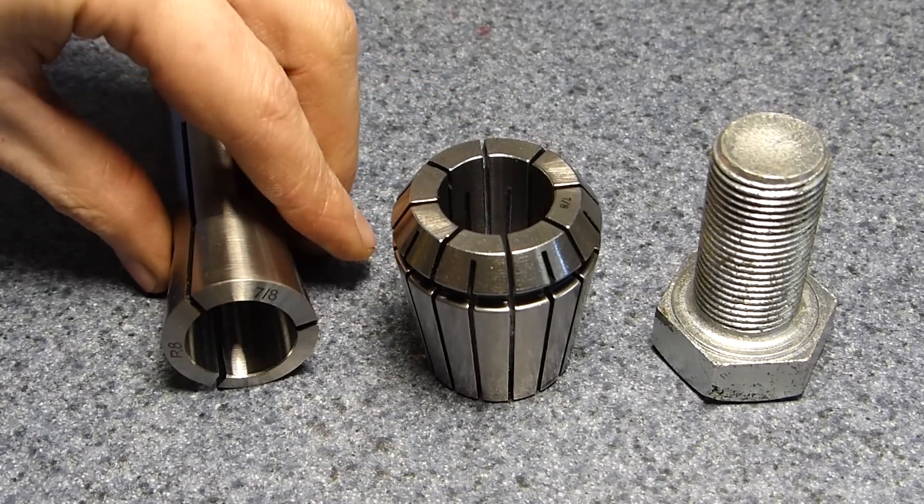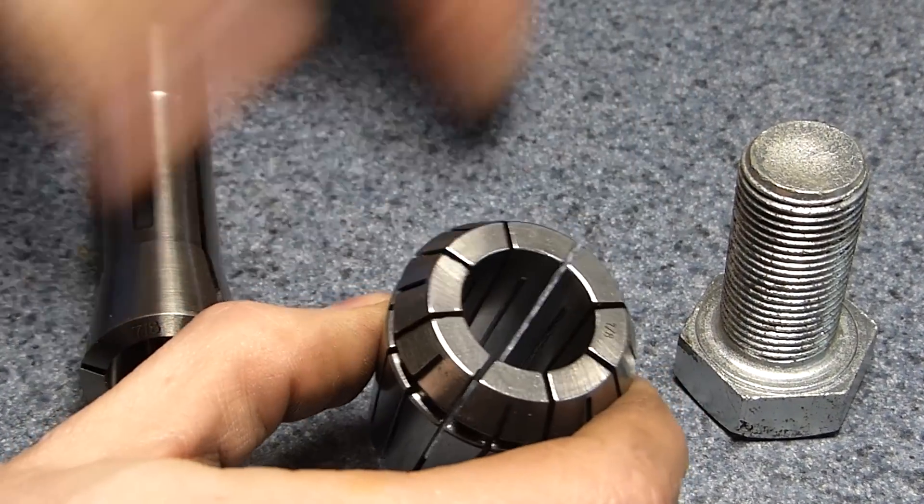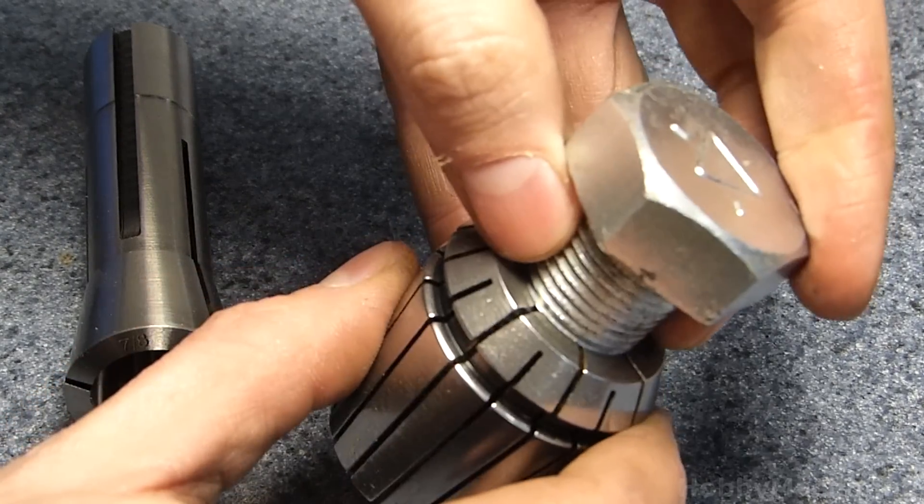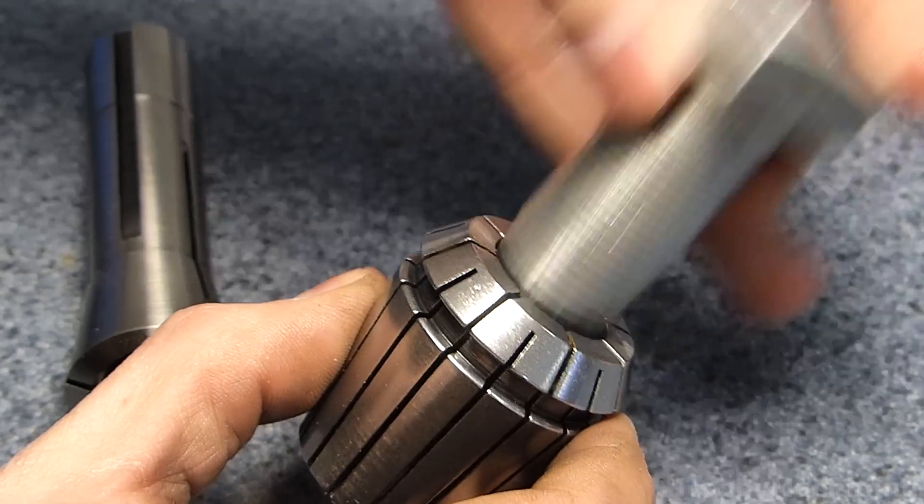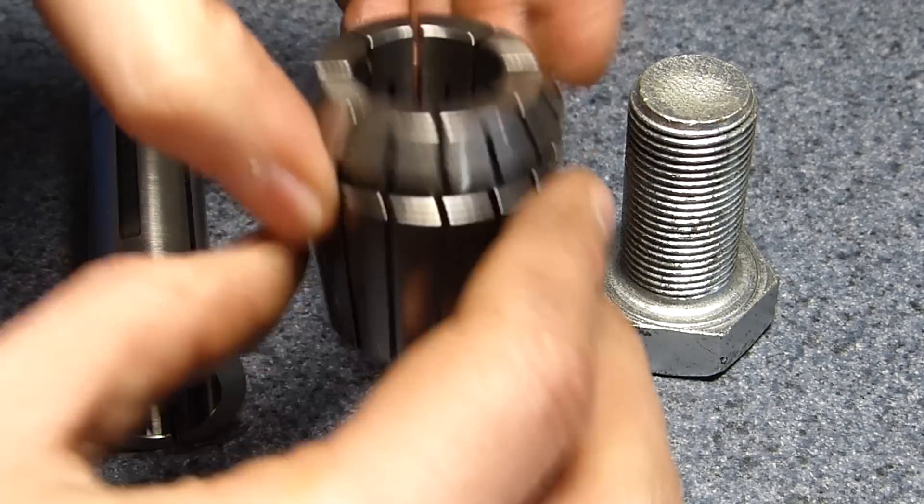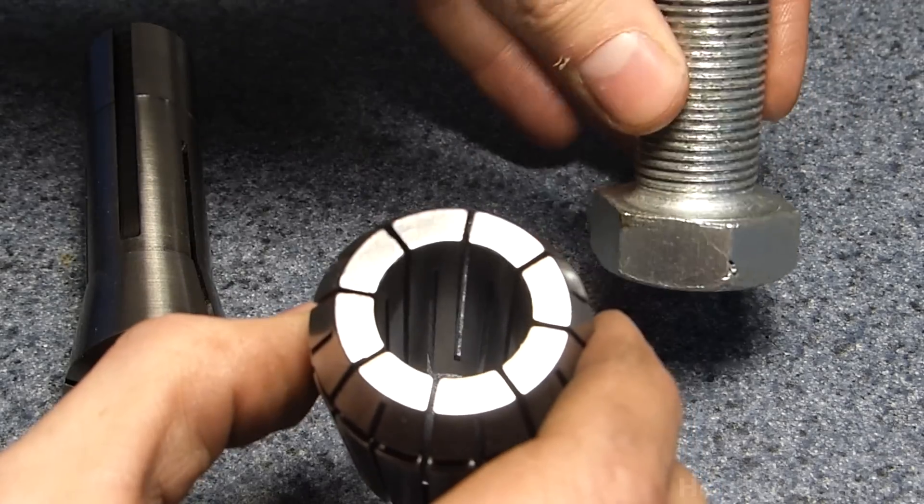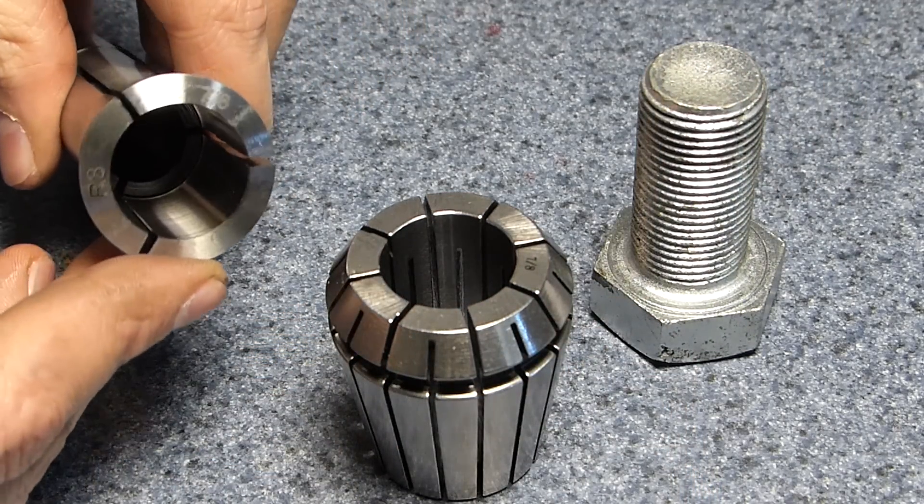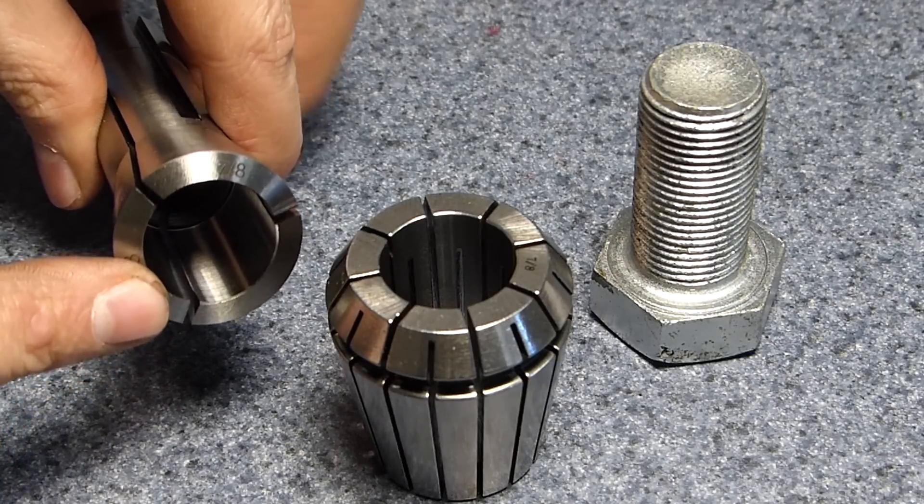Collets are basically devices with a specific size bore made for holding tools or work. This is a 7 eighths collet and a 7 eighths bolt. It's a pretty tight fit. And then when this taper is engaged, it causes these fingers to squeeze closed and create a nice tight fit. What I like about this R8 collet is that it's got three fingers and my chuck has three jaws.